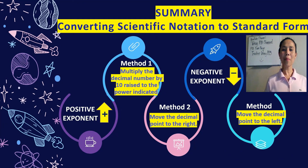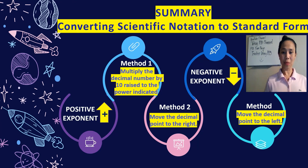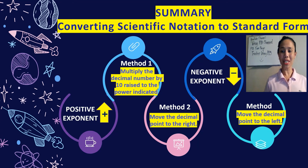To summarize what we have learned today, to convert scientific notation to standard form, consider if it's a positive or negative exponent. If it's a positive exponent, we can follow two methods: first, multiply the decimal number by 10 raised to the power indicated; and method two, move the decimal point to the right. When dealing with a negative exponent, move the decimal point to the left. Easy, right?